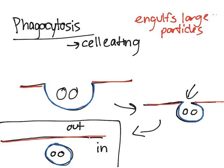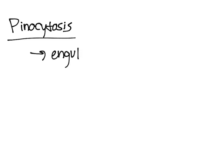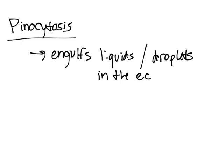That's just what vesicular transport is. The only difference would be really minor, so pinocytosis does the exact same thing as phagocytosis, but instead of taking big particles it engulfs liquids/droplets in the extracellular fluid. That's pretty much the only difference between pinocytosis and phagocytosis.